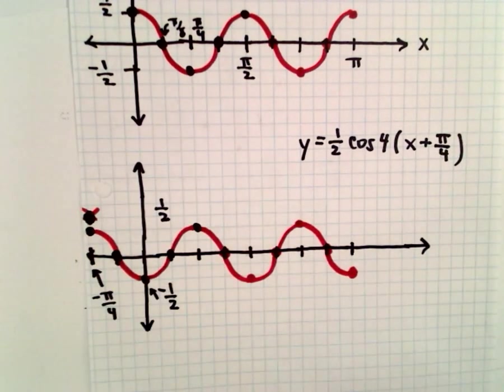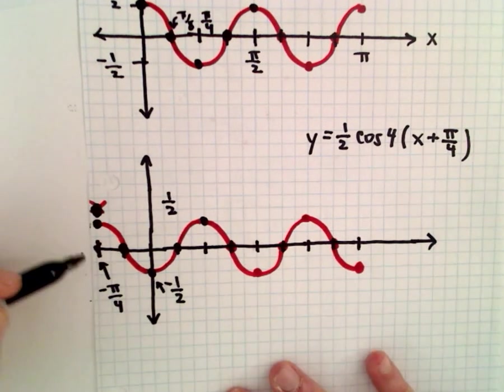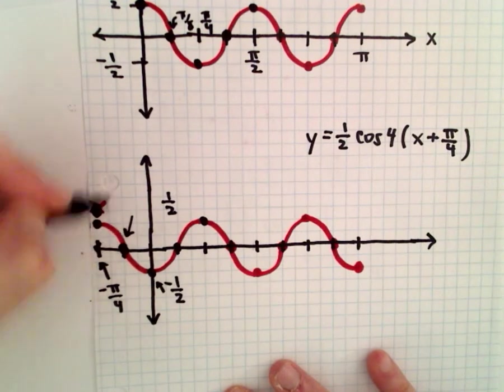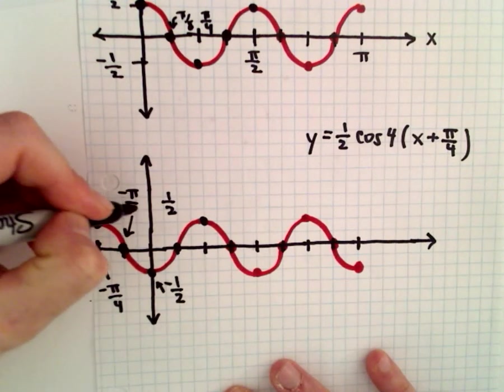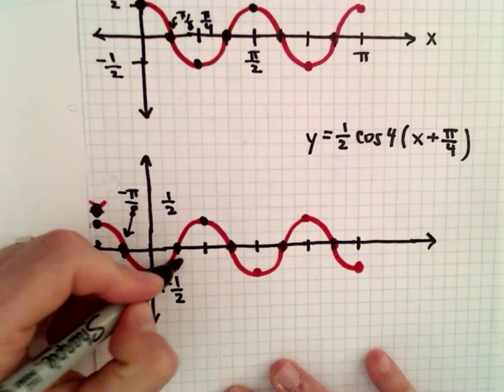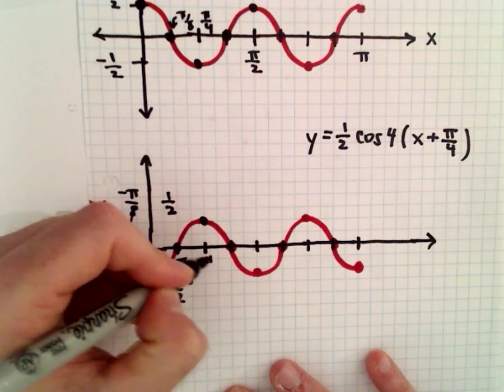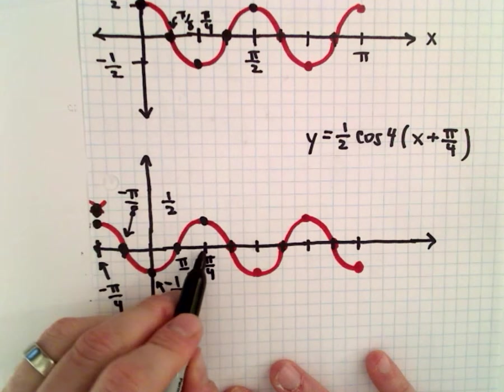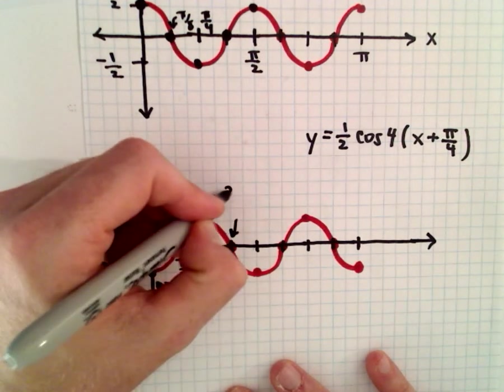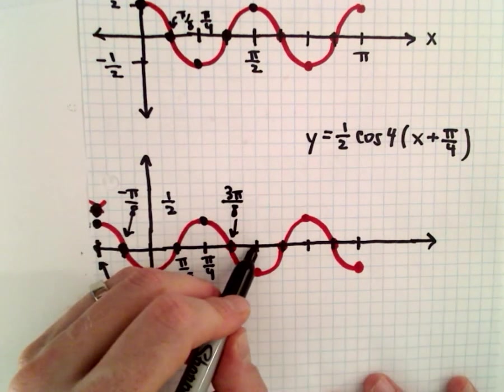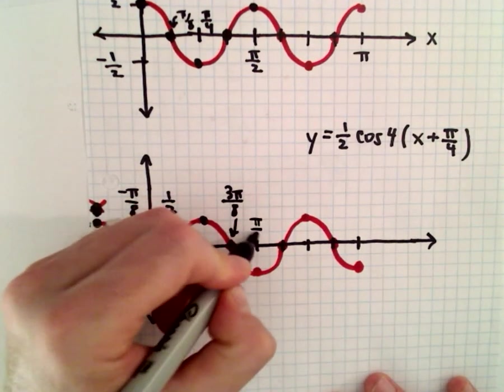And of course, it never hurts to label a few extra units. So this was negative pi over four, or negative two pi over eight, so that'll be the x coordinate of negative pi over eight, zero, we've got pi over eight right there, two pi over eight, or pi over four will be that x coordinate, three pi over eight will be that x coordinate, we've got four pi over eight, or pi over two.